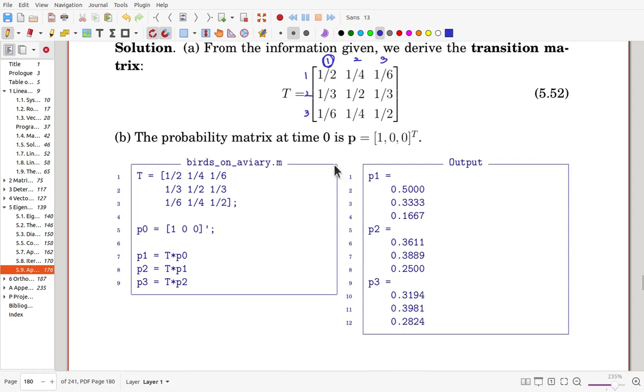So here, start with the probability at time zero, and this is the transition matrix. And we multiply T to get p1, another multiplication to get p2, another multiplication to get p3. Then we can see this one. So that, 30 minutes later, this is the probability of the birds on each level.